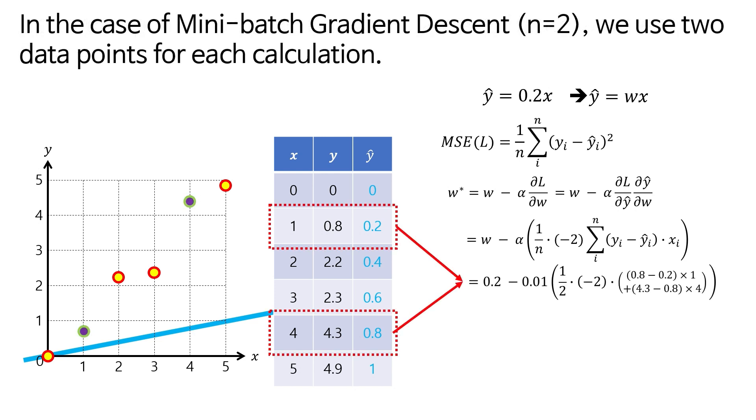In the case of mini-batch gradient descent, n equals 2, we use two data points for each calculation.